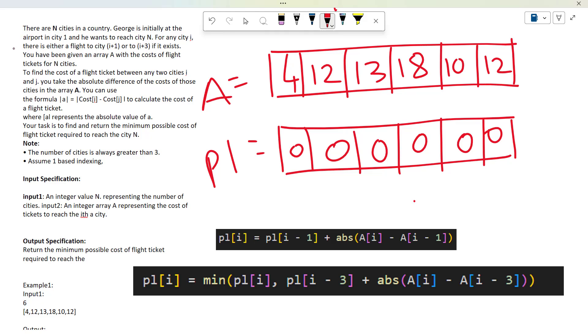If you see here, the question says that there are N cities in a country. George, the person, is currently at city number 1. We can move to either city i+1 or i+3 if it exists.